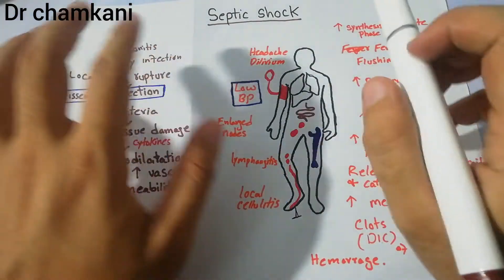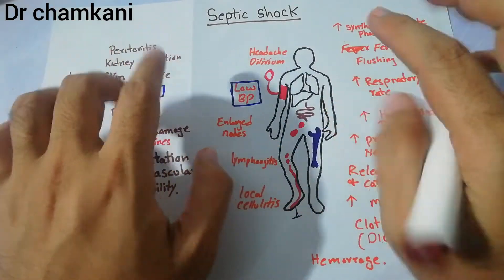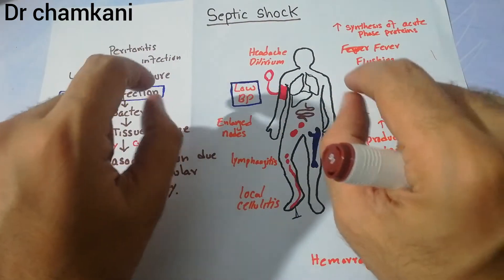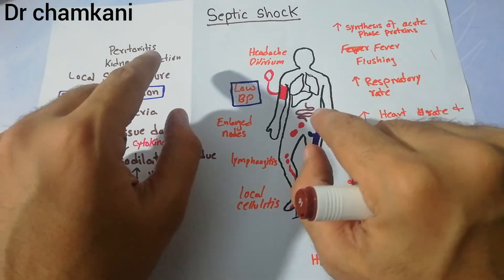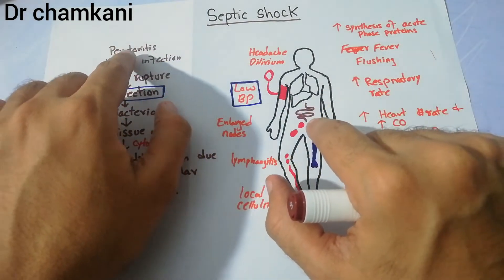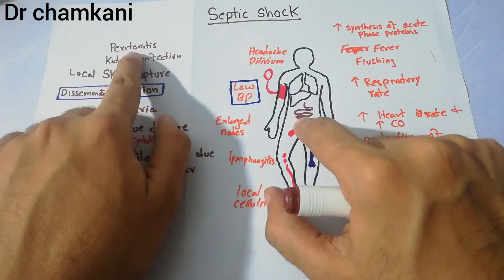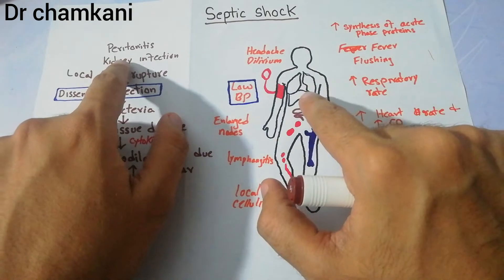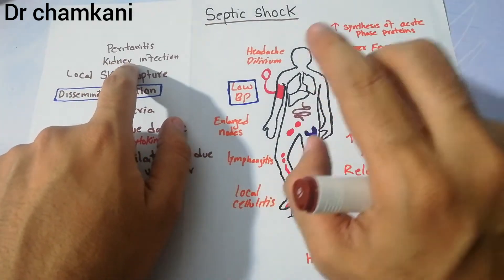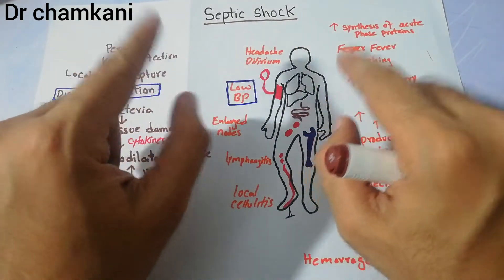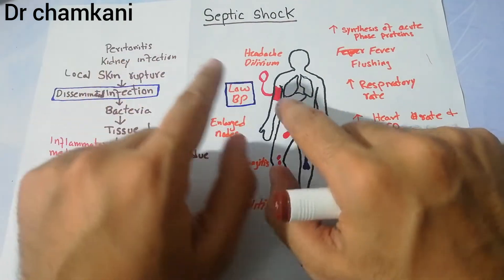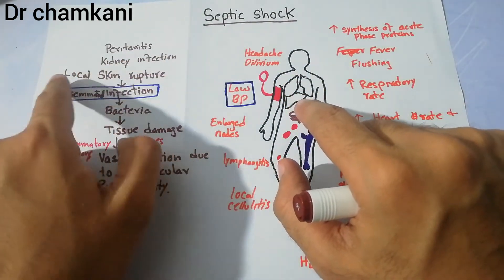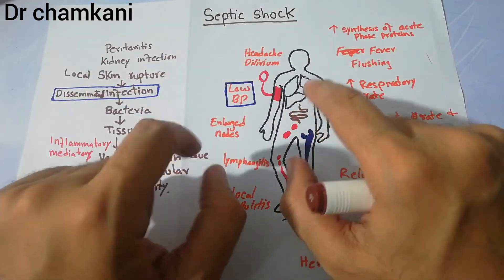Septic shock can come from any focus. It can start as peritonitis — for example, any infection of the intestine leading to infection of the peritoneum. This can spread through the blood into the whole body. Septic shock can also start from kidney infections, urinary tract infections, or a local rupture in the skin, which can cause disseminated infection.